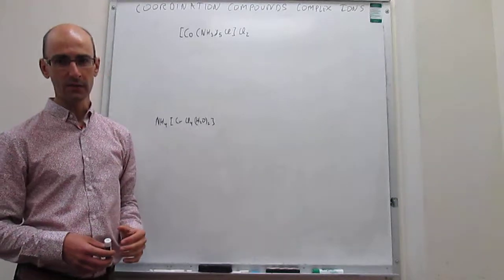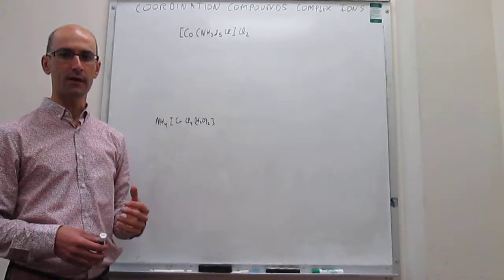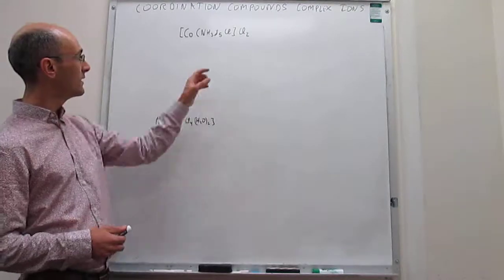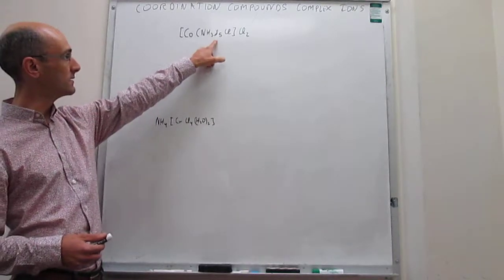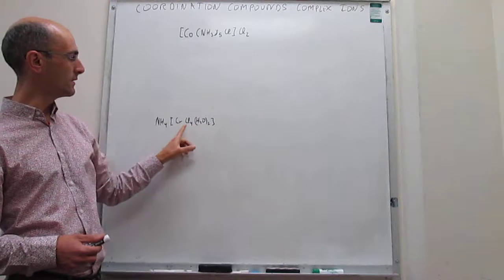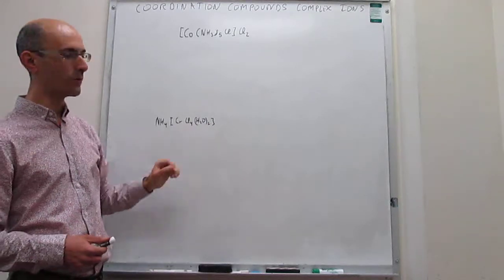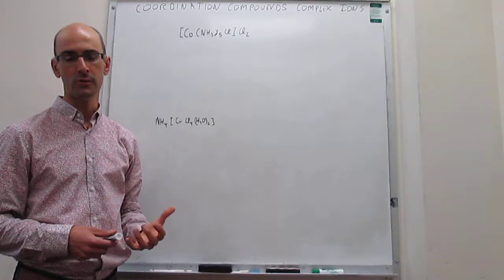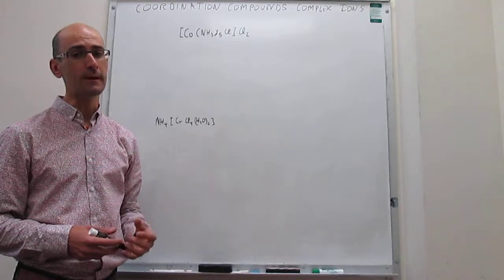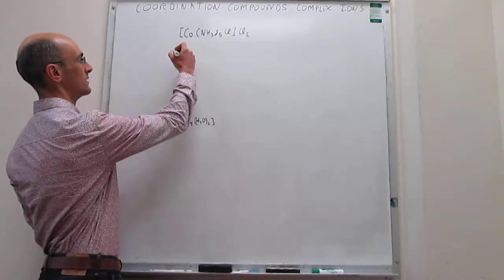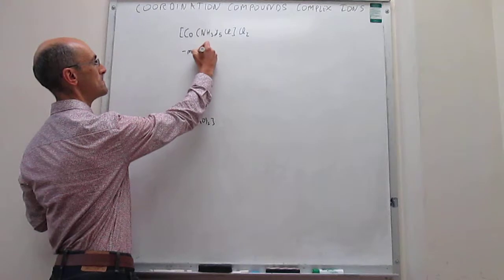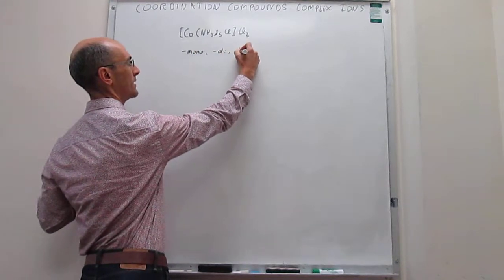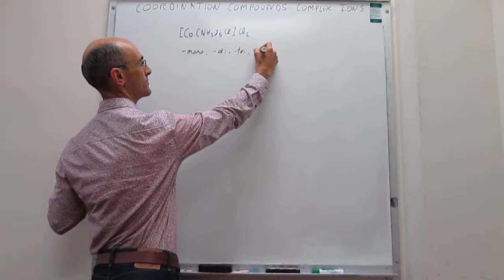Notice that many of these ligands can have a stoichiometry of more than one. Here you have five amine ligands, and here you have two aqua ligands and four chloro ligands. To specify that, you need to use prefixes: mono, di, tri, and so forth.